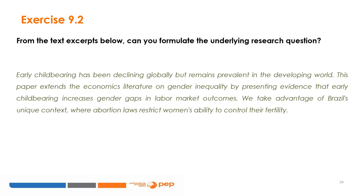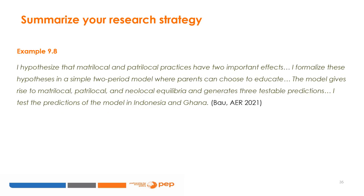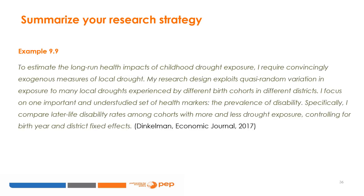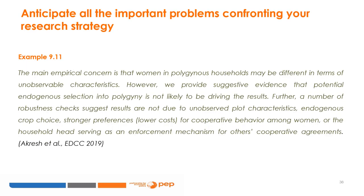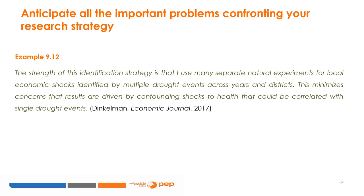You will be given excerpts from the introductory section of a paper and asked to formulate the underlying research question. Examples are drawn from a 2021 paper by Natalie Bao published in the American Economic Review, Taryn Dinkelman's 2017 paper published in the Economic Journal, Peter Nykamp et al.'s 2005 CGE paper published in Economic Modeling, and Richard Akrisch's 2019 paper published in Economic Development and Cultural Change.